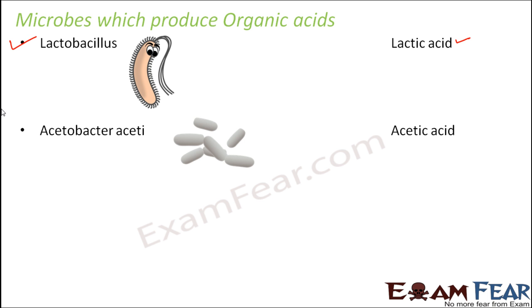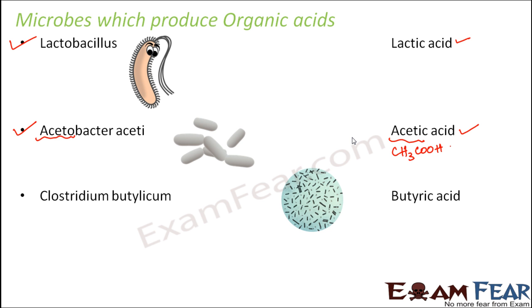There is another bacteria, Acetobacter aceti, which helps in producing acetic acid (CH₃COOH). From the name alone you can remember — Acetobacter has the same beginning 'aceto', so it produces acetic acid. There is also Clostridium butylicum, which produces butyric acid. So many different types of acids are produced by different microbes.